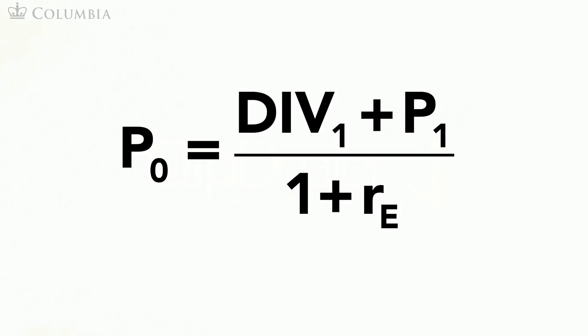Let's assume that you buy the stock today and sell it next year after receiving the dividend. The cash flow you receive next year is the sum of DIV₁ and P₁, that is the dividend plus the price you get from the sale. To figure out the price you should pay today, you discount this amount as shown in this formula.